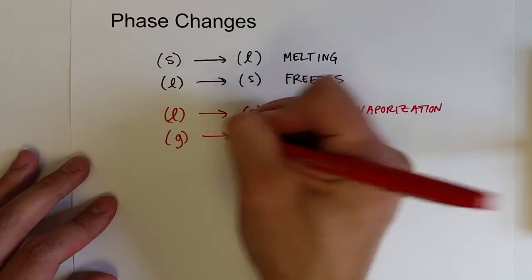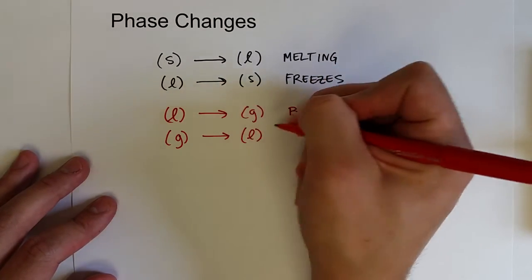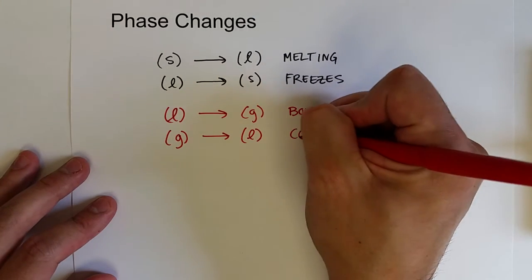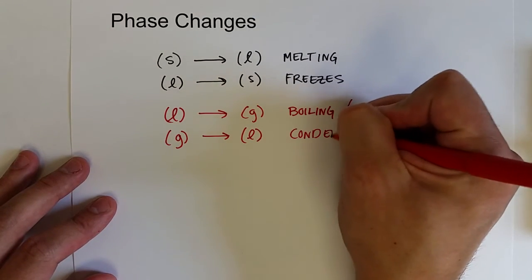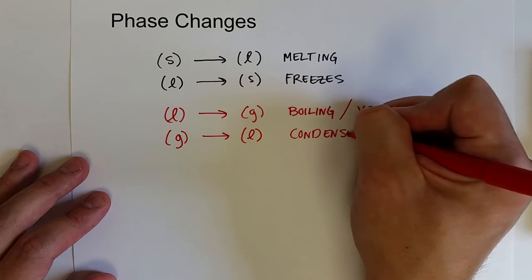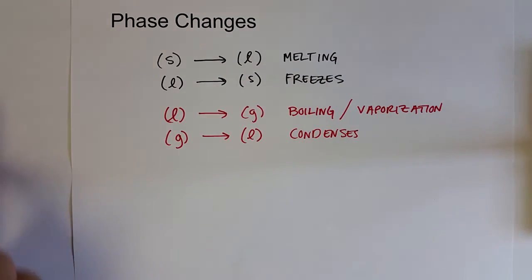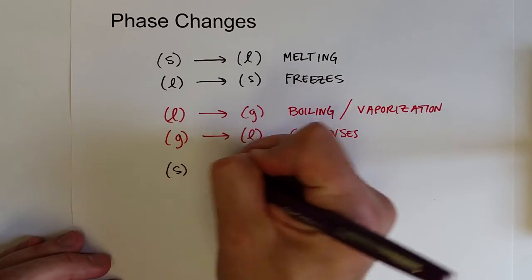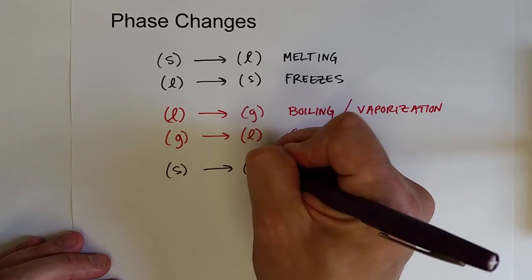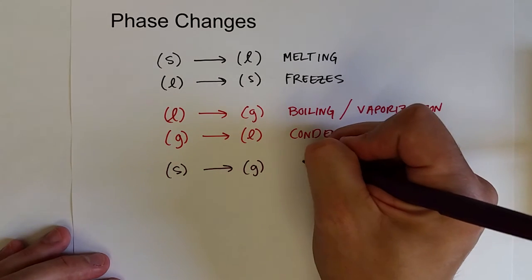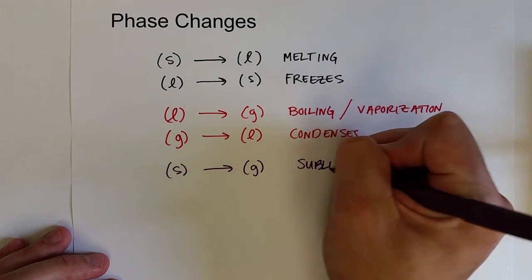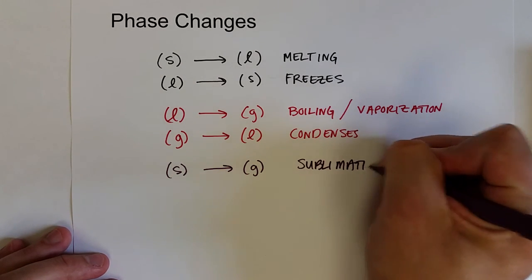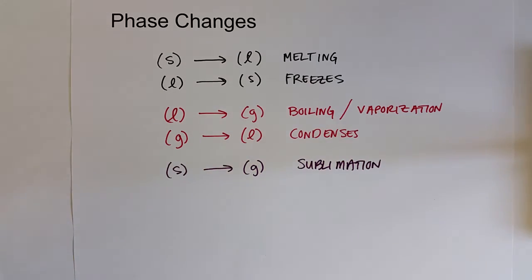When a gas changes to a liquid, that is condensing. And then if we skip the liquid phase, if we go from the solid phase to the gas phase, that is called sublimation or subliming.